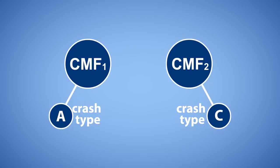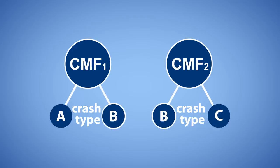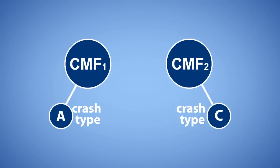If there are no applicable crashes common to both CMFs, as was the case in this example, then you can assume the full effect of both countermeasures and skip step 3. If the CMFs are applicable to any common crashes, then you need to apply all five steps as described. The key is to apply each individual CMF to the applicable crashes exclusive to that CMF and not applicable to another CMF in the analysis.